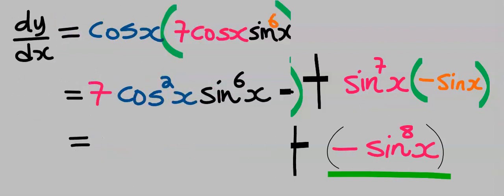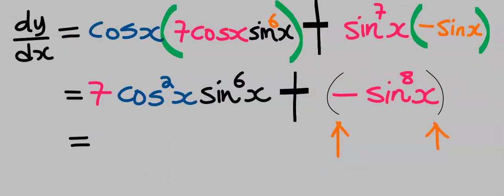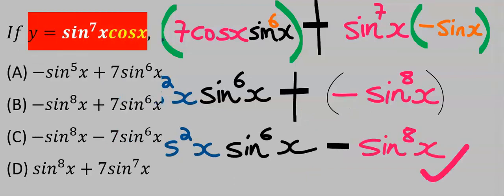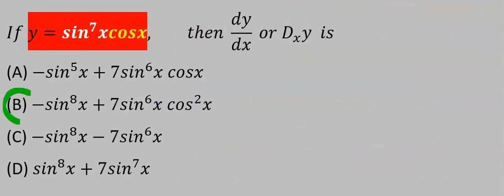Next you remove the bracket and plus multiply by minus will give you a minus and this becomes our dy dx. And from the options our answer is B.